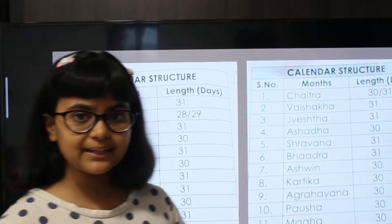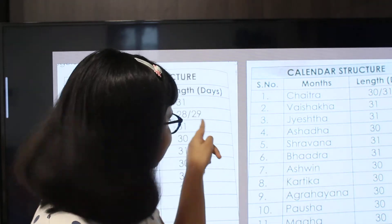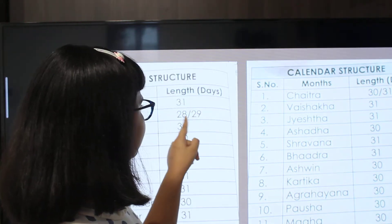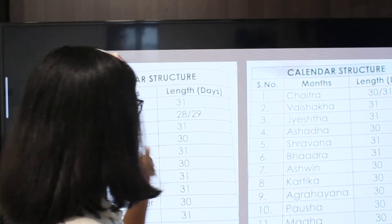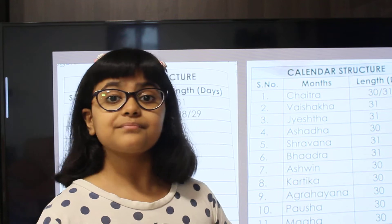In the Gregorian calendar, every fourth year is a leap year, in which February has an extra day — that is 29 days. Thus, a leap year has 366 days. In a normal year, February has only 28 days, and the number of days in a normal year is 365 days. When a leap year comes, February has 29 days, and the total number of days is 366.